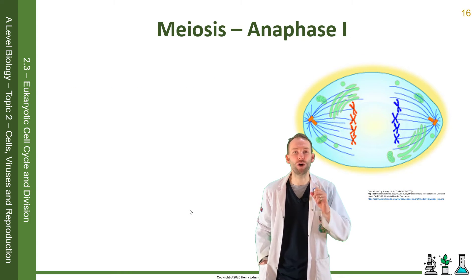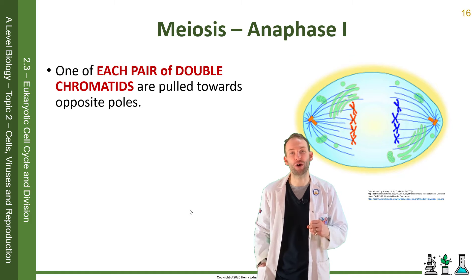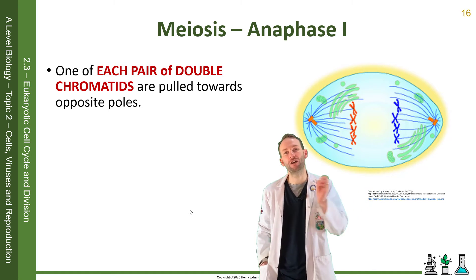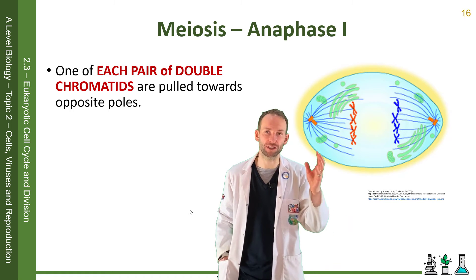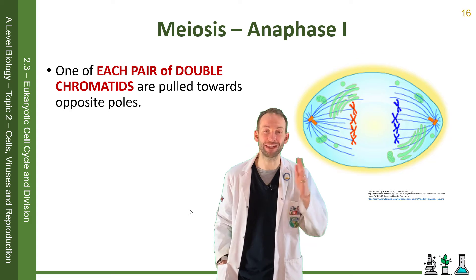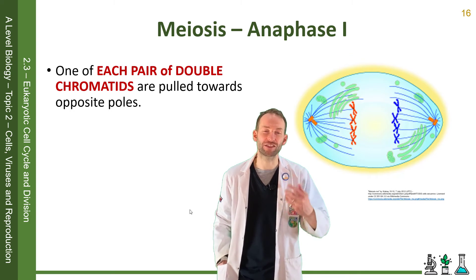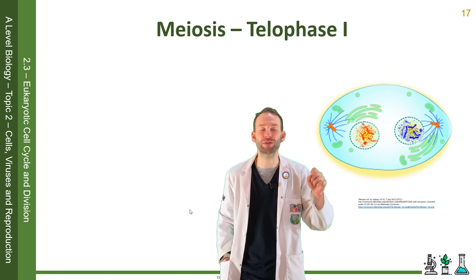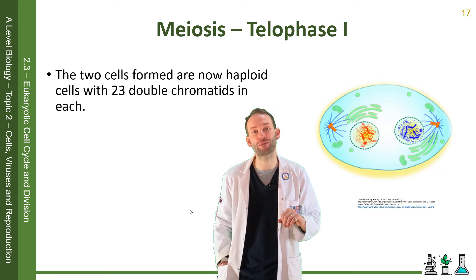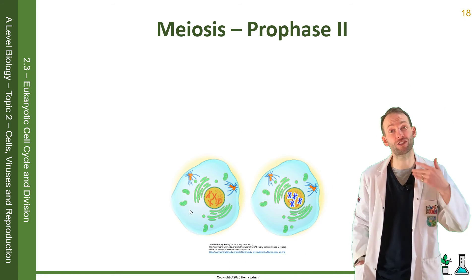In anaphase one, one of each pair of double chromatids gets pulled to opposite poles. We're not splitting the centromeres at this point — one whole chromosome from each homologous pair goes to each side, done by contracting the microtubules. Telophase then happens where we form the nucleolus and the nuclear envelopes, and we get cytokinesis, and that's the end of meiosis one.